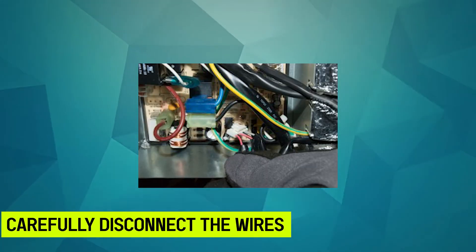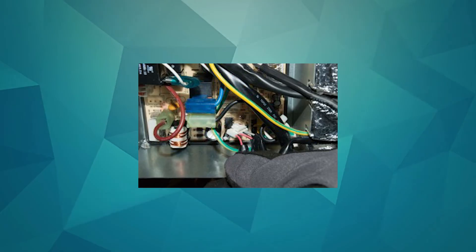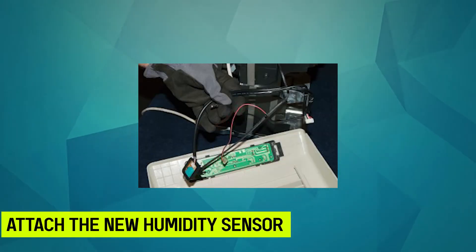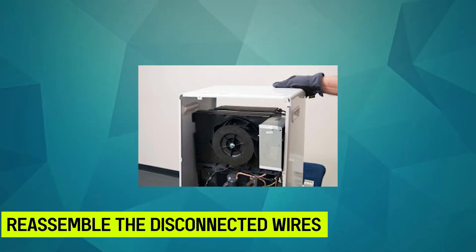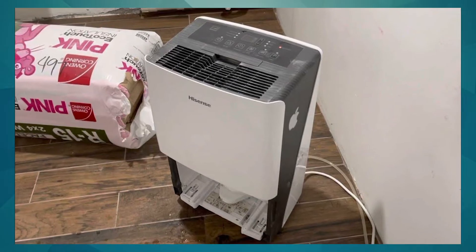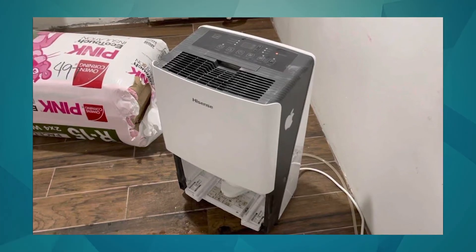Carefully disconnect the wires to remove the humidity sensor. Attach the new humidity sensor in the front of the evaporator fins. Reassemble the disconnected wires to the sensor's control board. Finally, take the outer case and all the other parts and screw them back correctly.